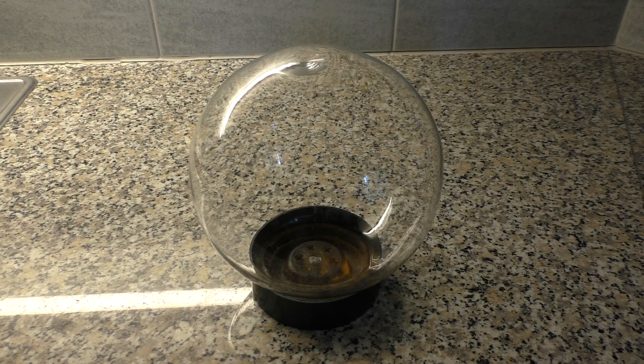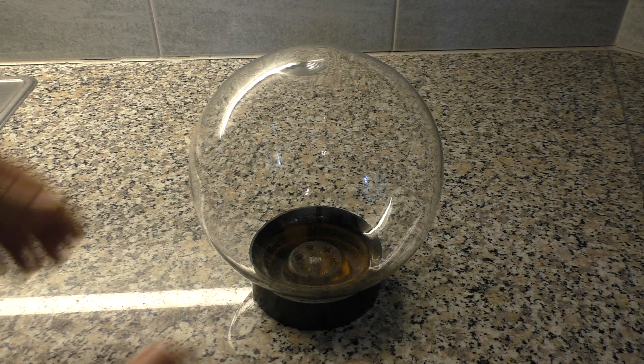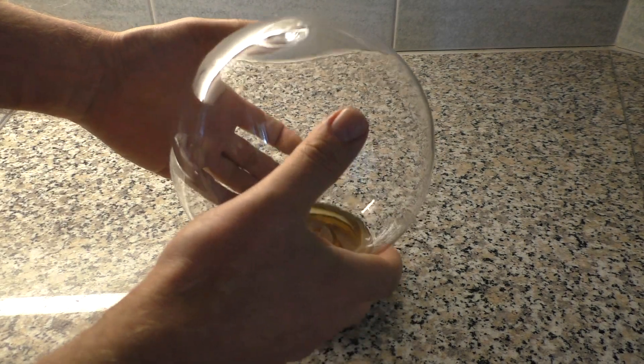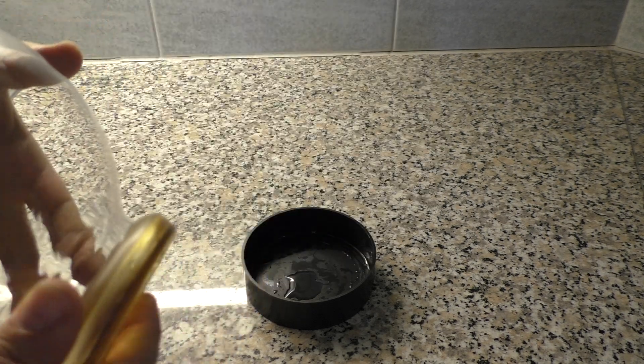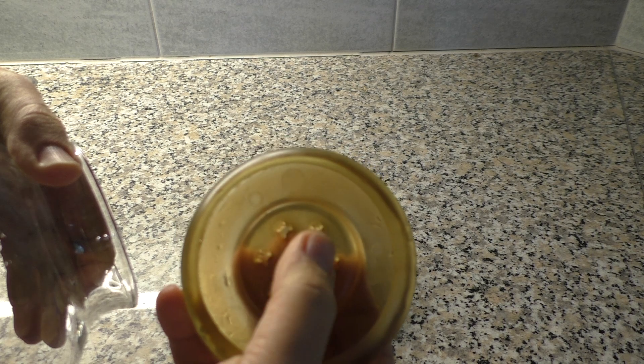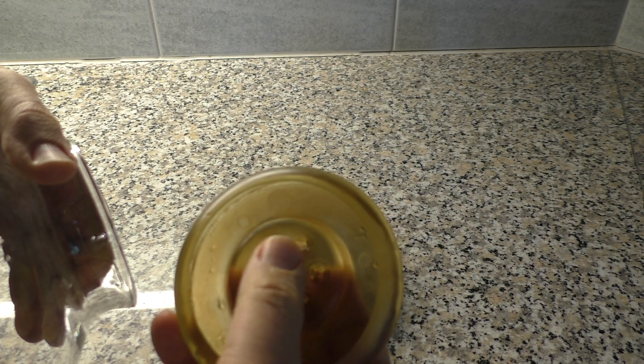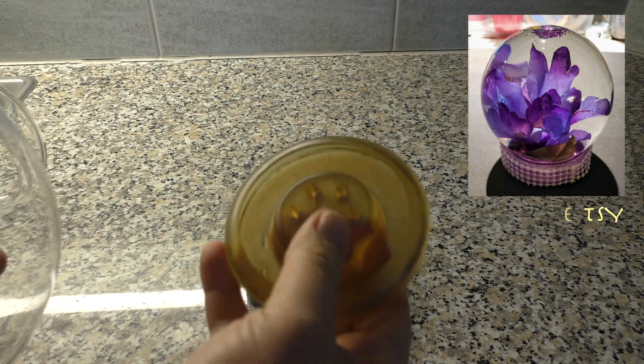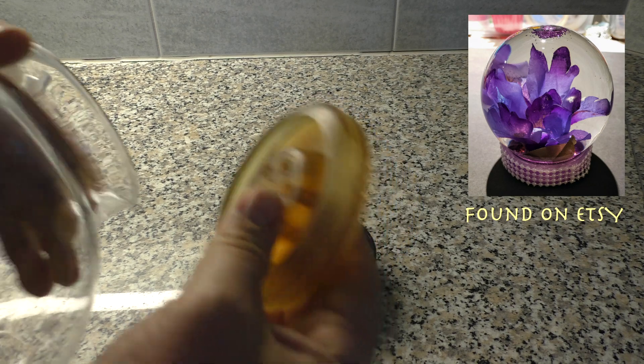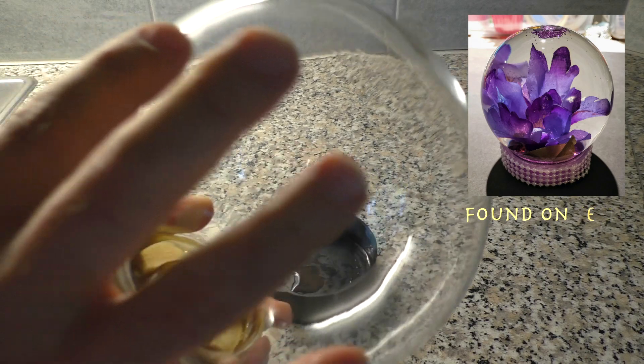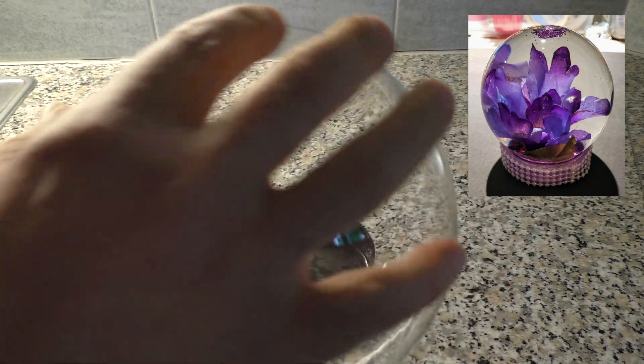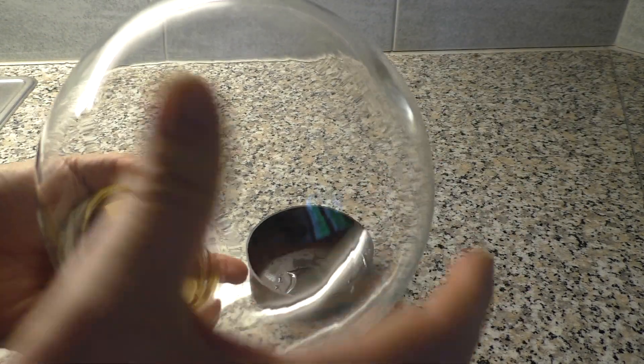We start with a glass ball like this one. These are normally used, they are filled with water and then here in the bottom cap there are some holes where you can put some flowers or any kind of decoration in it. And then when this is filled with water it gives a nice magnifying effect of whatever is inside.